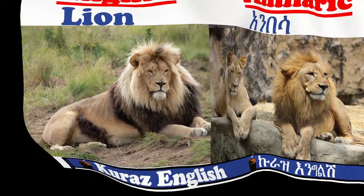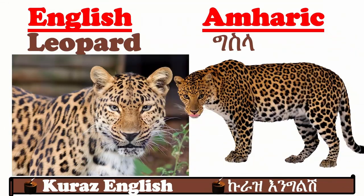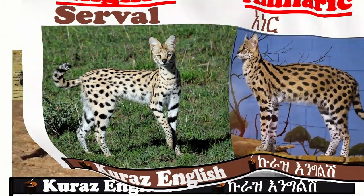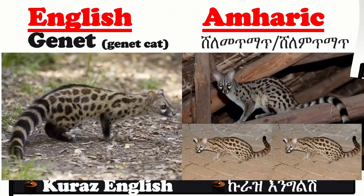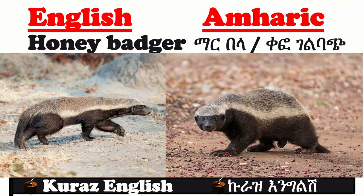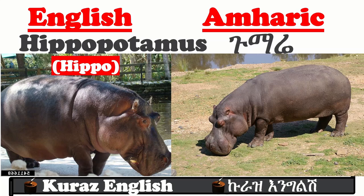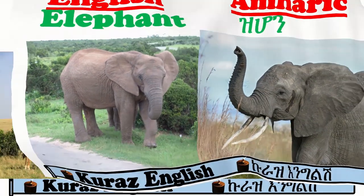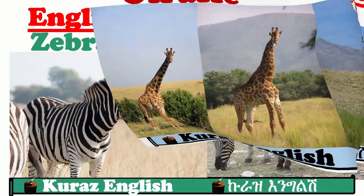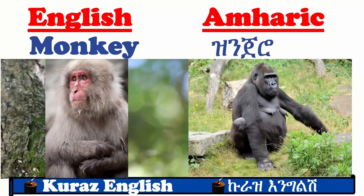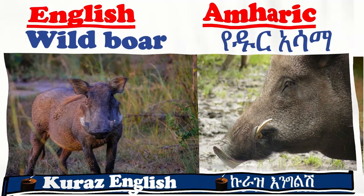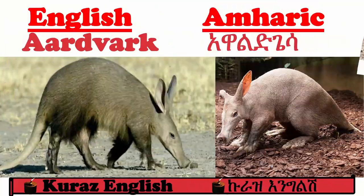Lion. Tiger. Cheetah. Leopard. Panther. Serval. African Civet. Jennet. Honey Badger. Hippopotamus or Hippo. Rhinoceros or Rhino. Elephant. Giraffe. Zebra. Monkey. Galada Baboon. Wild Boar. Warthog. Aardvark.